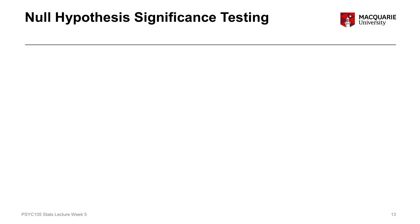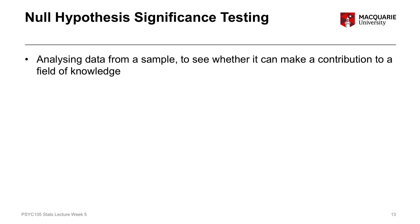So, null hypothesis significance testing. What this allows us to do is essentially what I've been explaining — what we're trying to achieve by doing a research project. We gather data from a sample to see if it's reflecting an effect in a wider population, to see if we can make some contribution to a body of knowledge and understanding of a phenomenon. Through the research process we're trying to find out something new about the world and about people.